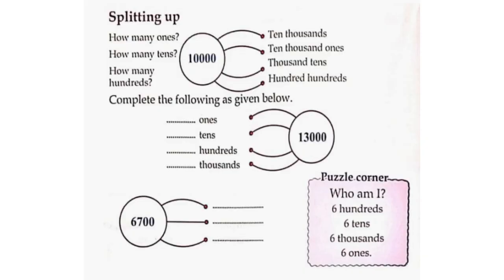Splitting up: How many 1s? How many 10s? How many 100s? For 10,000: it contains 10,000 ones, and can be expressed in terms of its place value components.